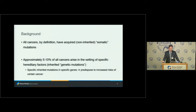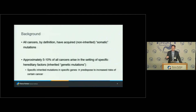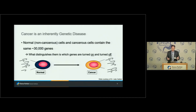That fraction looks very different cancer to cancer. Ovarian cancer — probably more than 20 percent are arising in a hereditary setting. On the other end of the spectrum would be lung cancer, where it's probably less than 1 percent. When we talk about genetic testing for inherited risk, we're looking for specific inherited mutations in specific cancer risk genes where, when mutated, they predispose that individual to increased risks of a certain cancer, usually more than one. Cancer is an inherently genetic disease. All of us have the same 30,000 or so genes in every cell, whether that cell is normal or cancerous. What distinguishes a normal cell from a cancer cell is what genes are turned on and what genes are turned off.